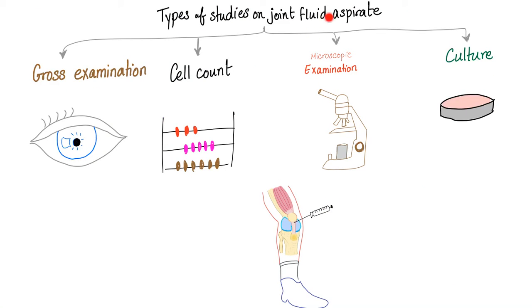Now you tap the joint and send the fluid to the lab. What will the lab do? Four things. Gross examination by the naked eye. I always laugh at naked eye. Cell count. You count the cells. Microscopic examination and then cultures to detect infection. If you didn't know that cultures are supposed to detect infections, there is no hope for you. This is not sociology. This is medicine.